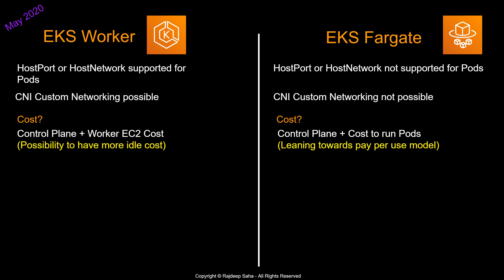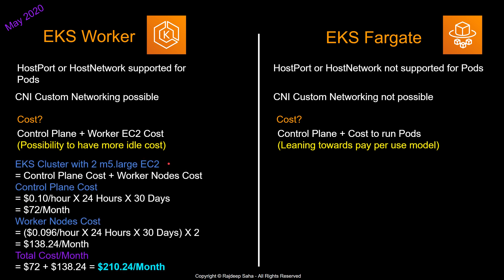This brings us to an important aspect: cost. For a regular EKS cluster, the cost is straightforward — control plane cost plus the cost of worker EC2s. There is a possibility of more idle costs, since EC2 instances may only run at 20–30% utilization while you still pay the full price. For EKS Fargate, you still pay for the control plane as a fixed cost, plus the cost to run pods. Let's look at a regular EKS cluster cost example — two M5 large EC2s, regular on-demand pricing, no spot or reserved instances.